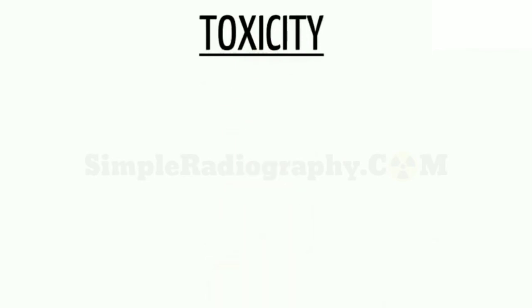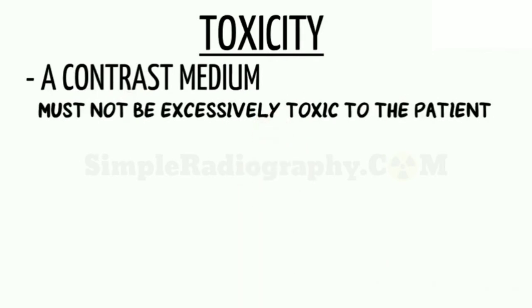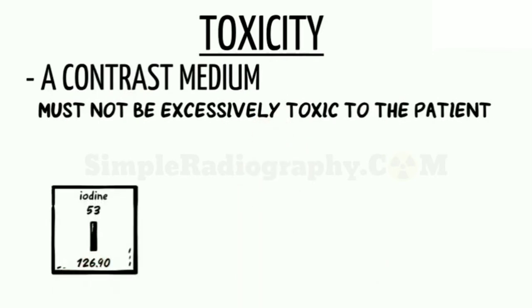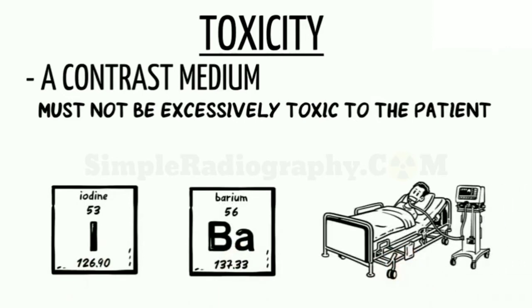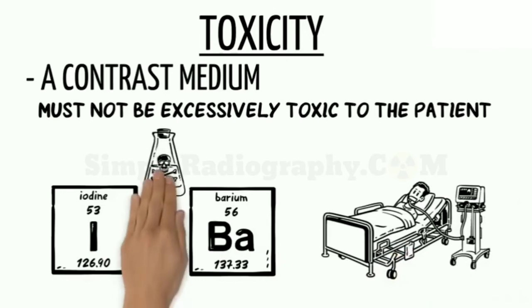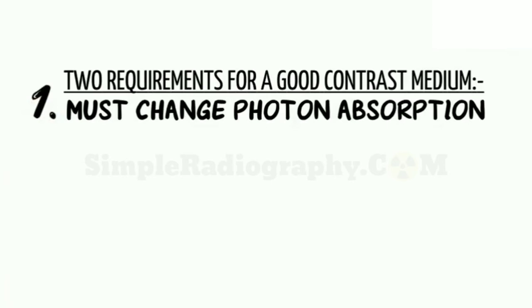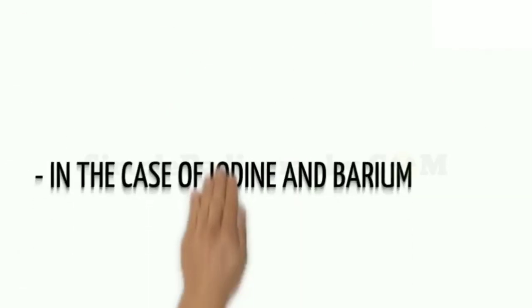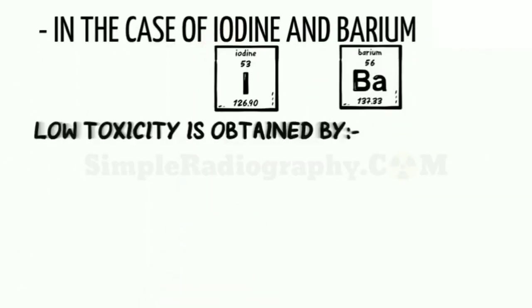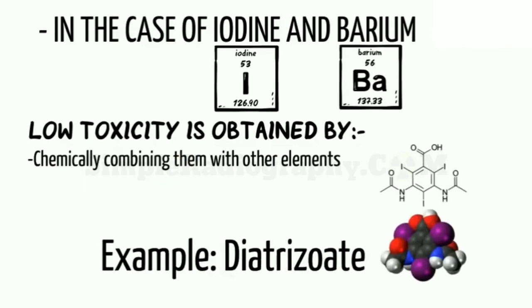Regarding toxicity, it should be noted that regardless of atomic number, a contrast medium must not be excessively toxic to the patient. If, for example, pure iodine or pure barium were used as a medium, the patient would become violently ill, because iodine and barium in their natural states are poisons. So the two requirements for a good contrast medium are: number one, it must change photon absorption, and number two, it must be relatively non-toxic. In the case of iodine and barium, low toxicity is obtained by chemically combining them with other elements — for example, diatrizoate.